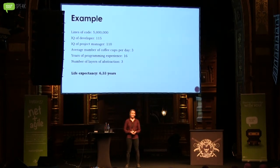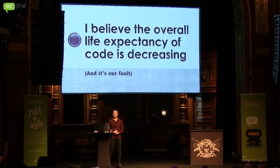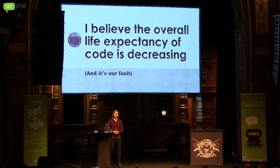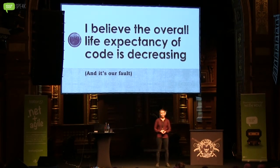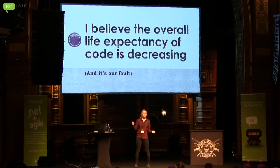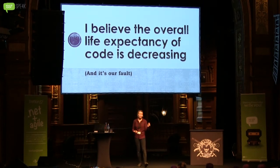But if you do not believe there is an absolute formula, I'm going to tell you the conclusion of this talk right now. I believe that the overall life expectancy of code is decreasing. And I believe that is our fault. I've been thinking about this for quite some time. I don't really know where I got this idea — I guess it's from working with code, seeing how my colleagues work with code, seeing how code is treated on GitHub, how developers discuss code on Twitter. But I have this feeling that things are going down, things are going to hell. We're doing our jobs a bit worse every day.